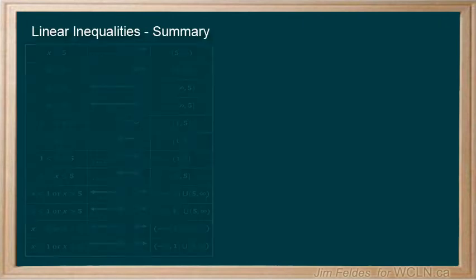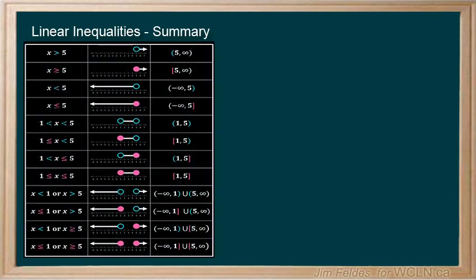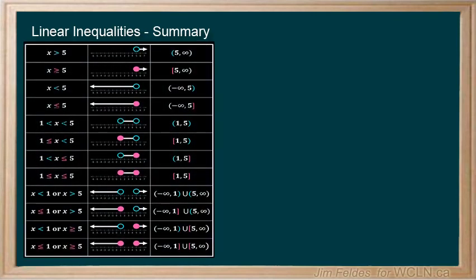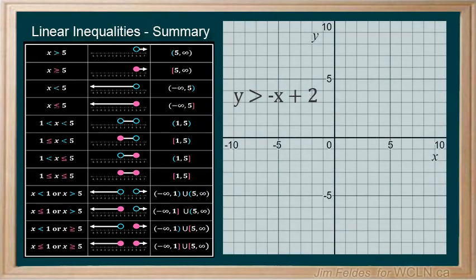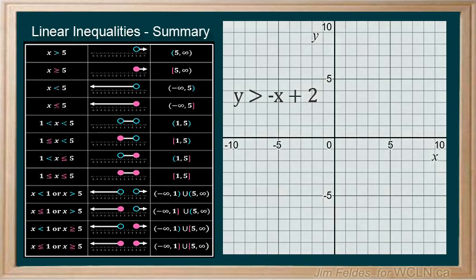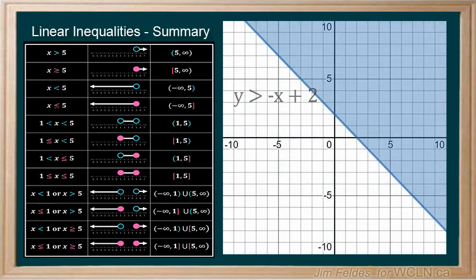As we've learned in previous episodes, inequalities cover a wide range of possibilities. With two variable linear inequalities, our solutions go beyond an interval on a line. Now they extend in two dimensions and we need to show this effectively on a graph.